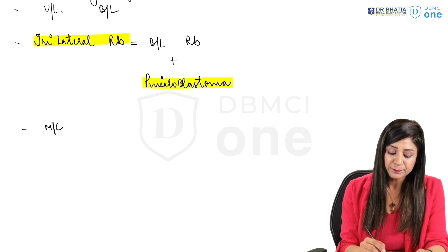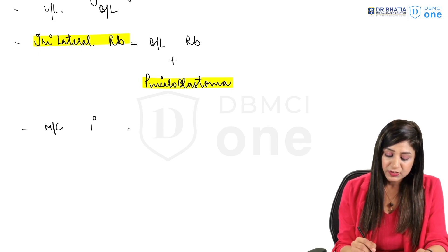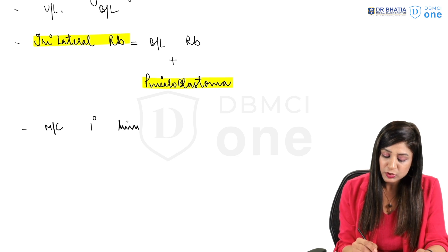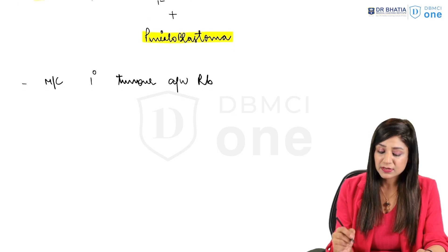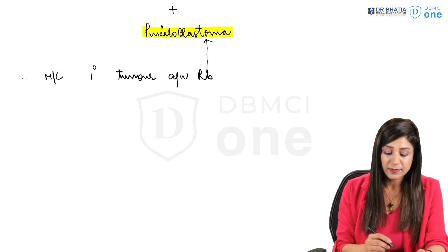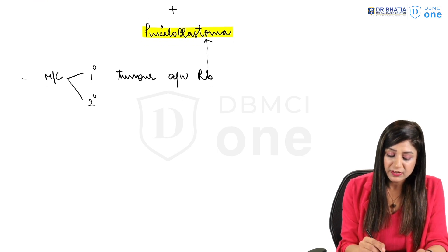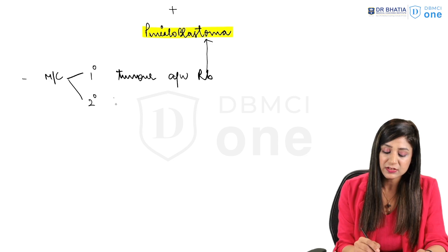Another important thing: what is the most common primary tumor which is associated with retinoblastoma? Primary one is the pinealoblastoma while the most common secondary tumor which is associated will be the osteosarcoma.